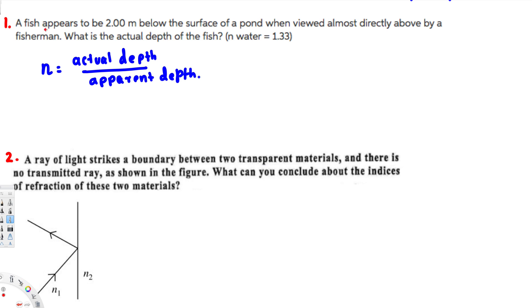First, they're saying your fish appears to be two meters, so this is apparent depth, right? This part. Now we have the refractive index is provided, so the question is asking for the actual depth. All we have to do is rearrange this equation and plug in the values.